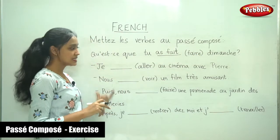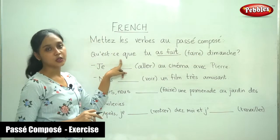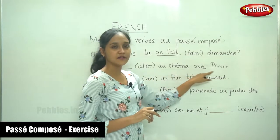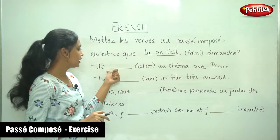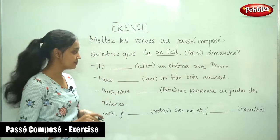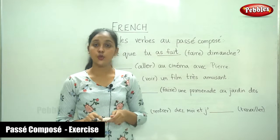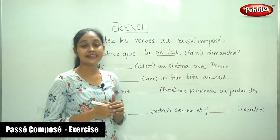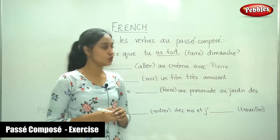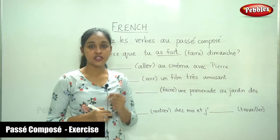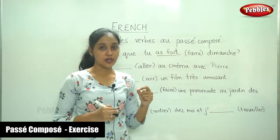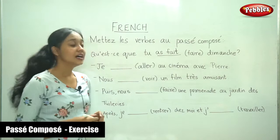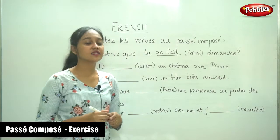These are answers to that question. Je [aller] au cinéma avec Pierre. Here the verb is aller, which means 'to go.' You have to remember carefully which verbs take avoir and which take être. Aller takes être conjugation.